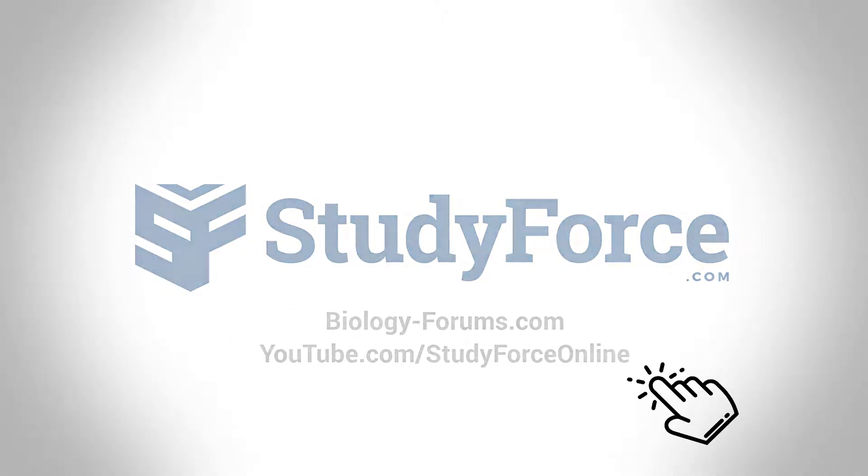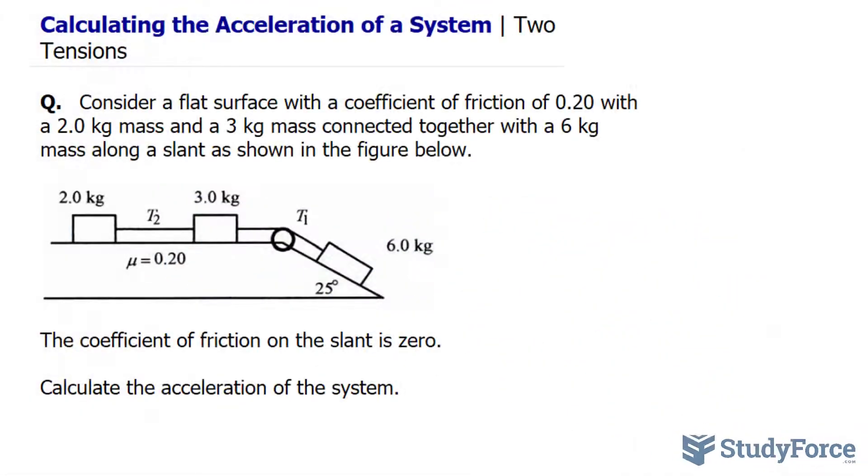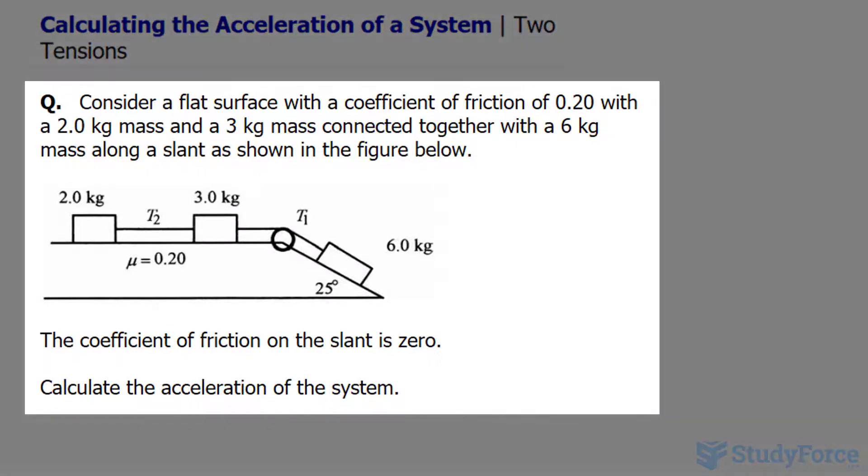In this lesson, I'll show you how to calculate the acceleration of a system that has three masses and two cords. The question reads, consider a flat surface with a coefficient of friction at 0.2 with a 2.0 kilogram mass and a 3 kilogram mass connected together with a 6 kilogram mass along a slant as shown in the figure below.